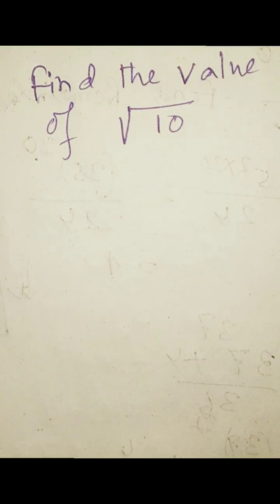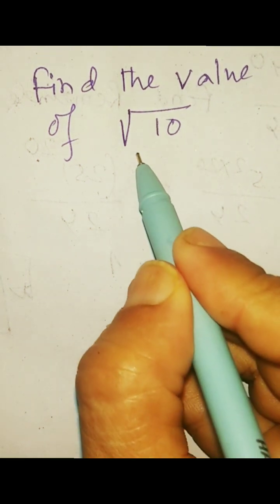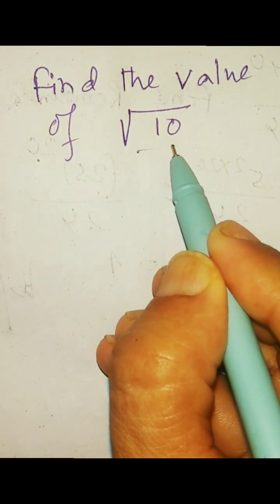Welcome to my channel MathsMama. Here is a magical trick to find the square root of a non-perfect square number. Root over 10 is a non-perfect square number.